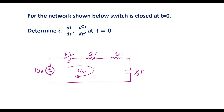In this video, I will take one example on initial conditions. For the network shown below, the switch is closed at t equal to 0. Determine i, di by dt, and d square i by dt square at t equal to 0 plus. This is the given circuit — a series RLC circuit.